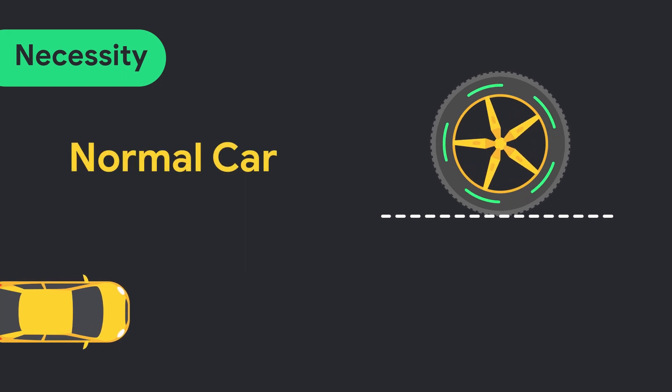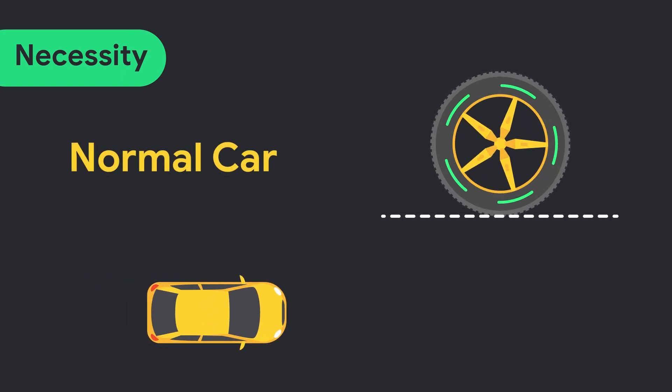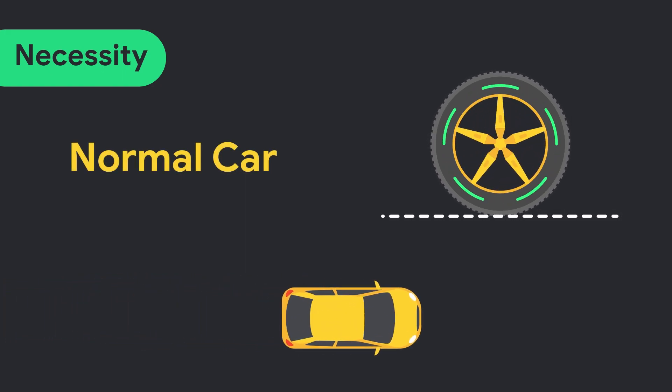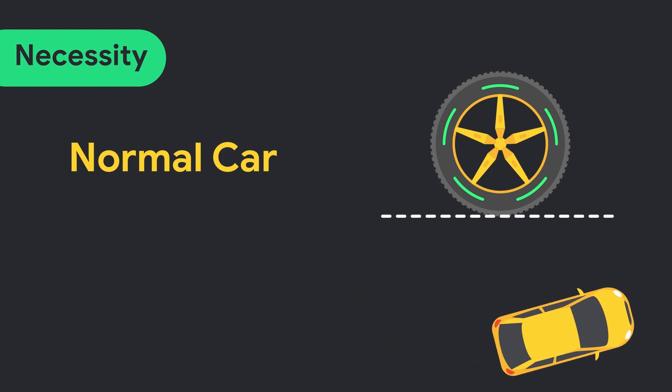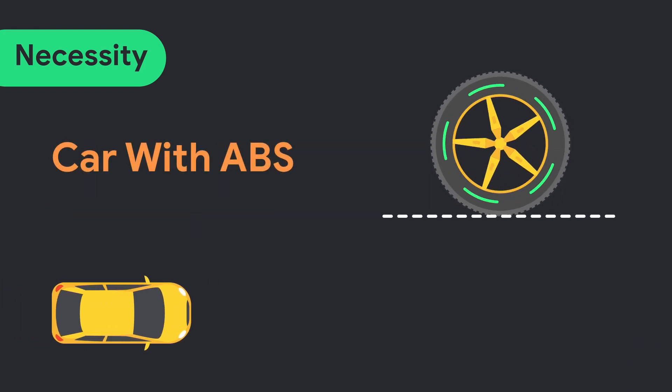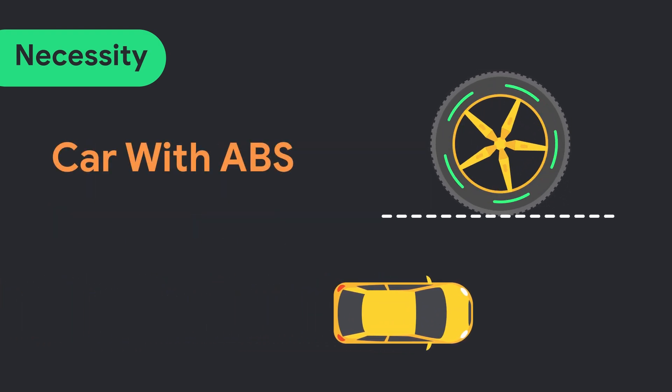When driver suddenly applies the brake, braking system locks the wheels of vehicle. This causes the wheel skid, which results in poor handling. ABS system prevents the locking of wheels, which eliminates the wheel skidding and thus, driver handling can be maximized.